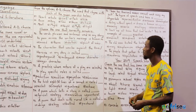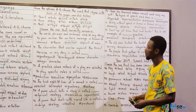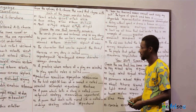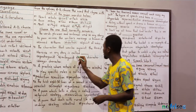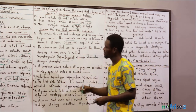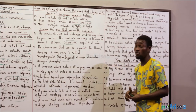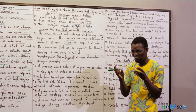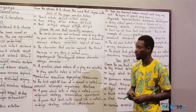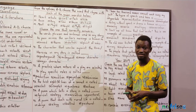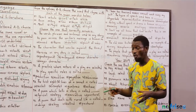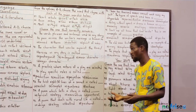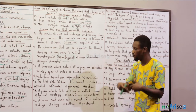Question 91: the character that works against the hero or heroine in any story is called — is it protagonist, antagonist, minor character, or major character? The answer is the antagonist. The protagonist is the hero or heroine. Minor characters are not given serious roles, while major characters are given serious roles. The antagonist is the one who works against the protagonist.